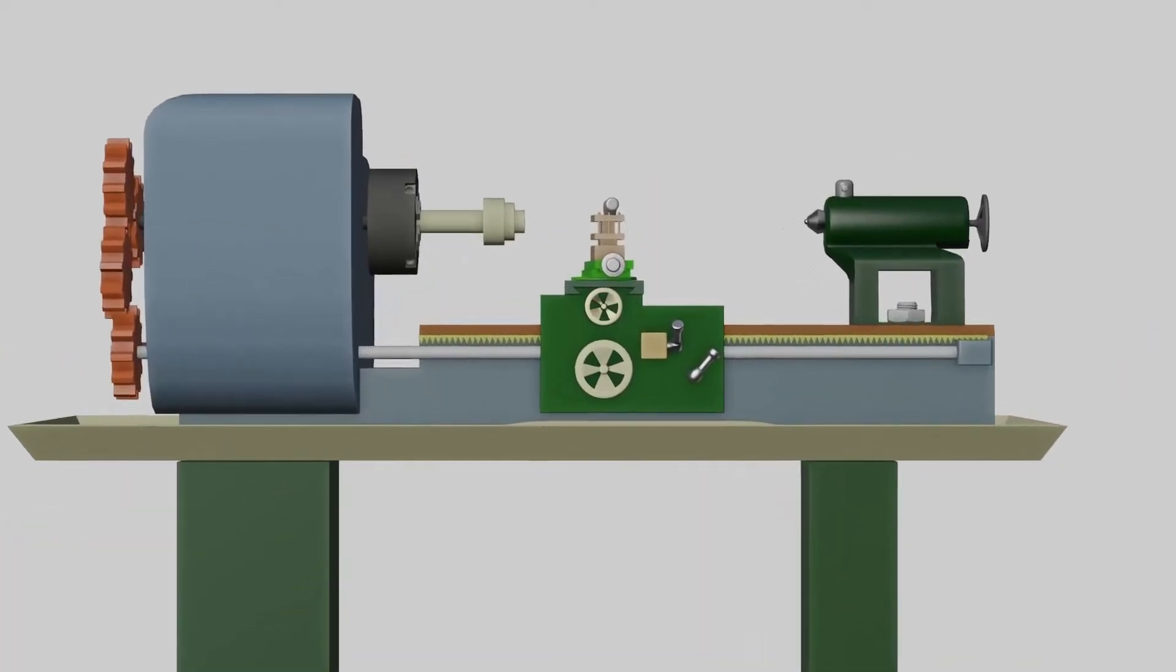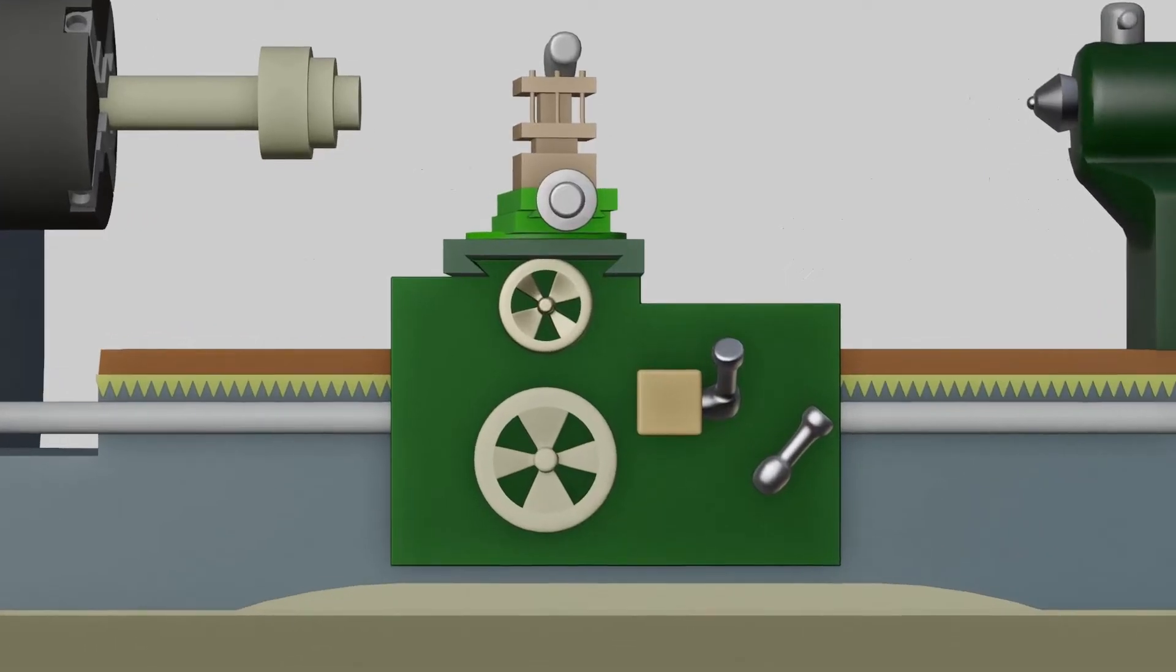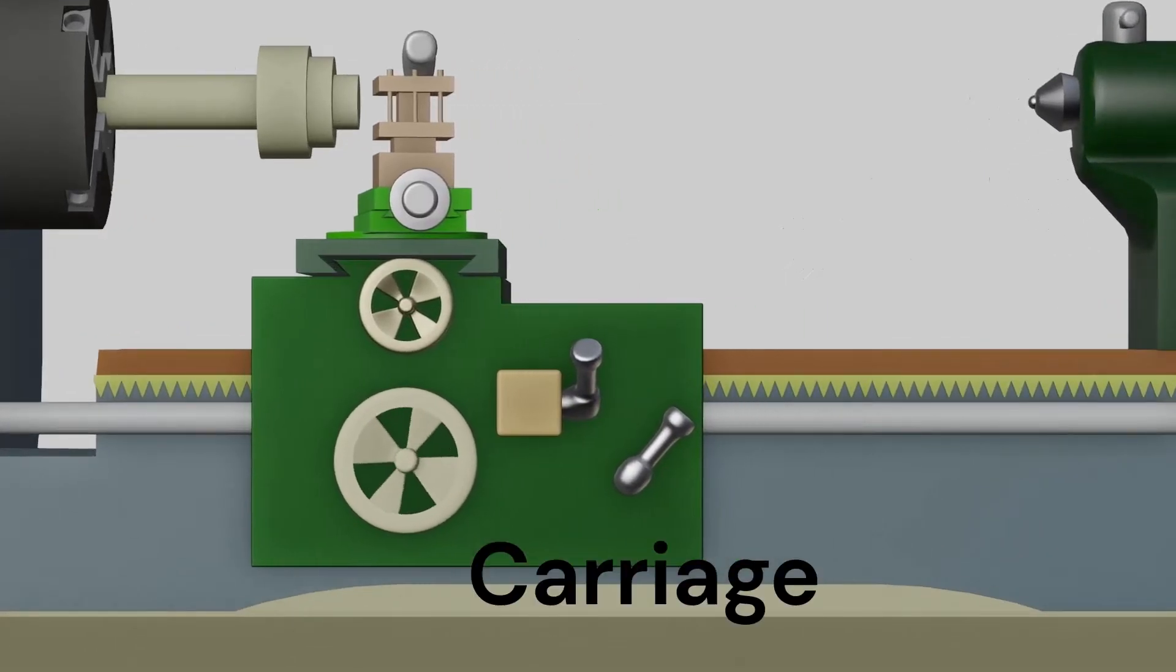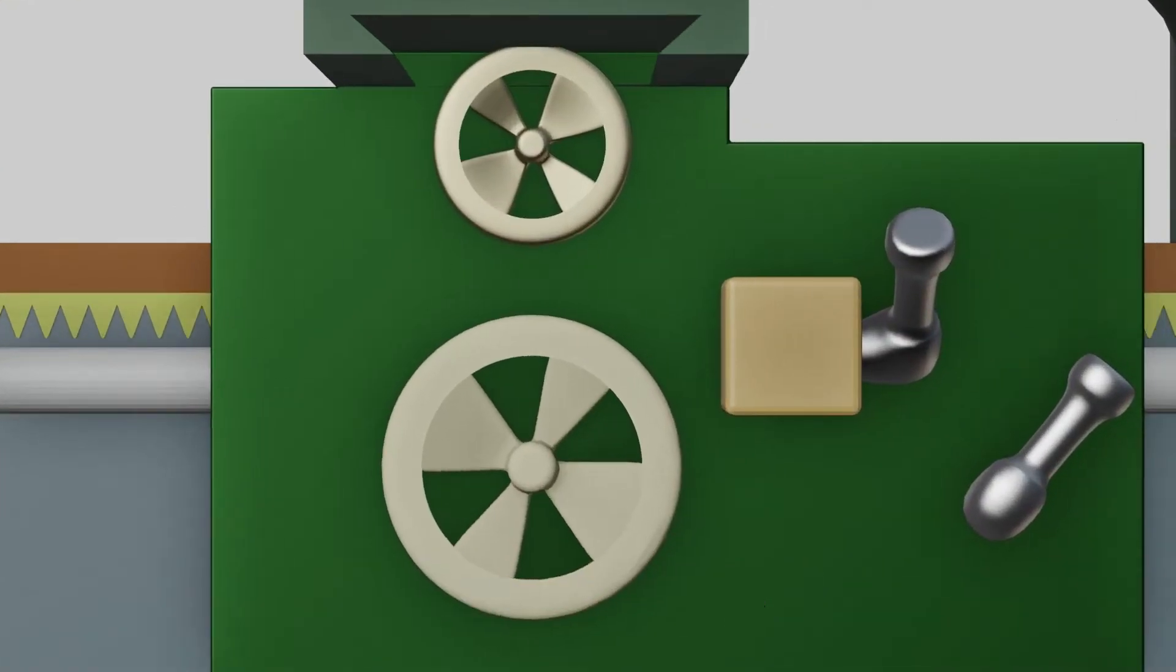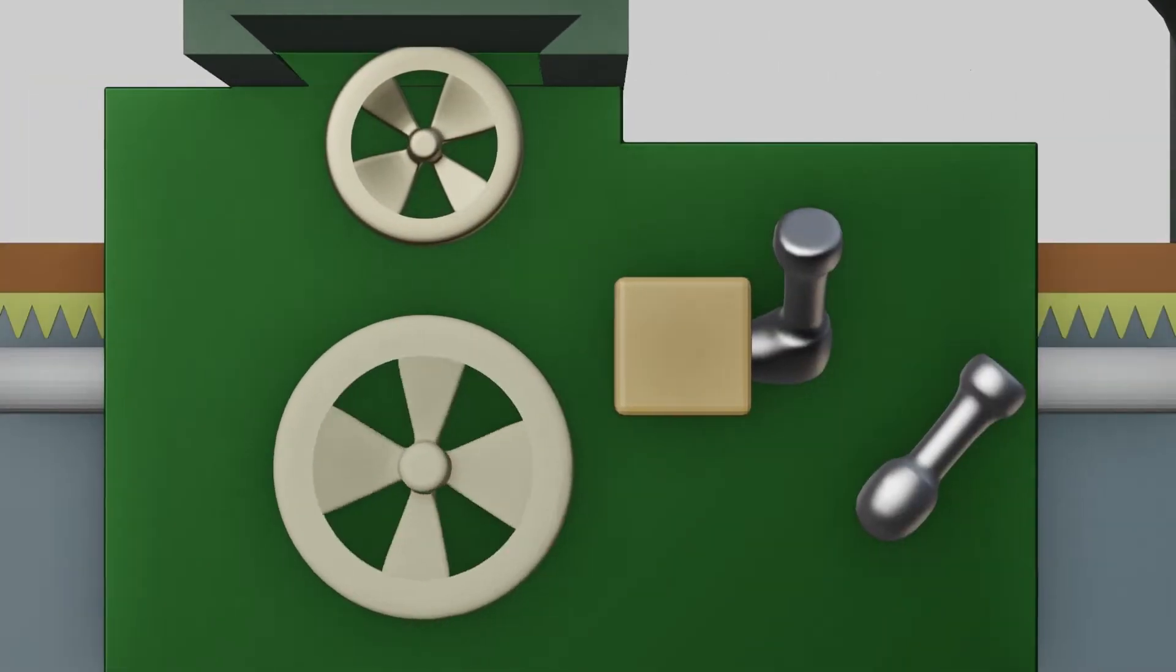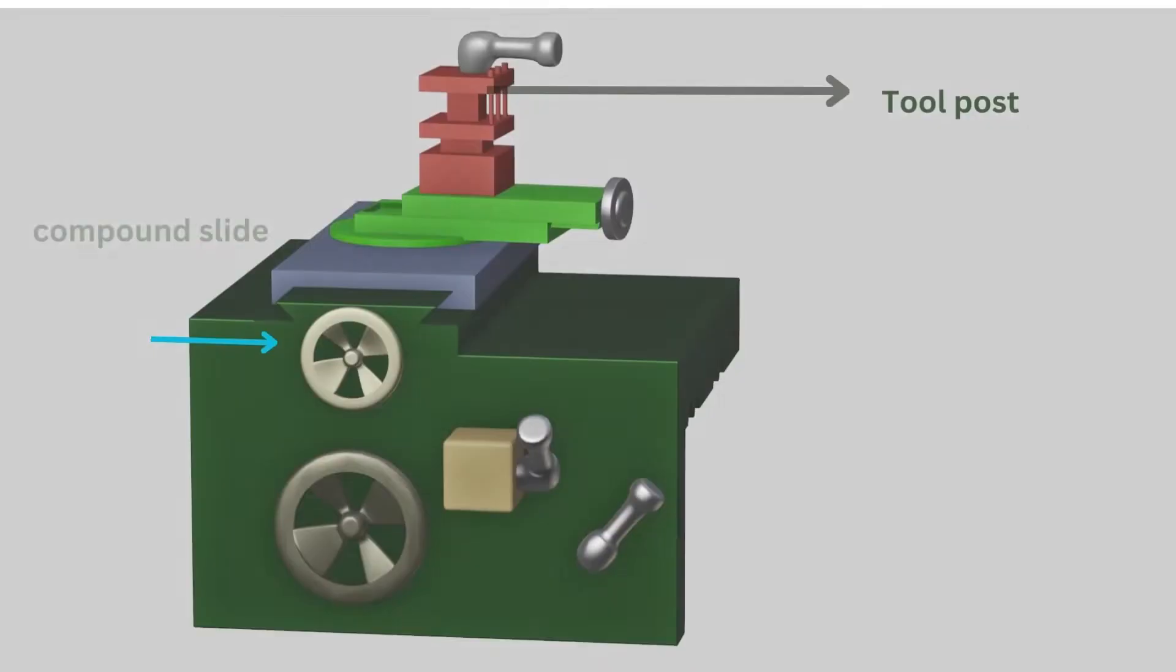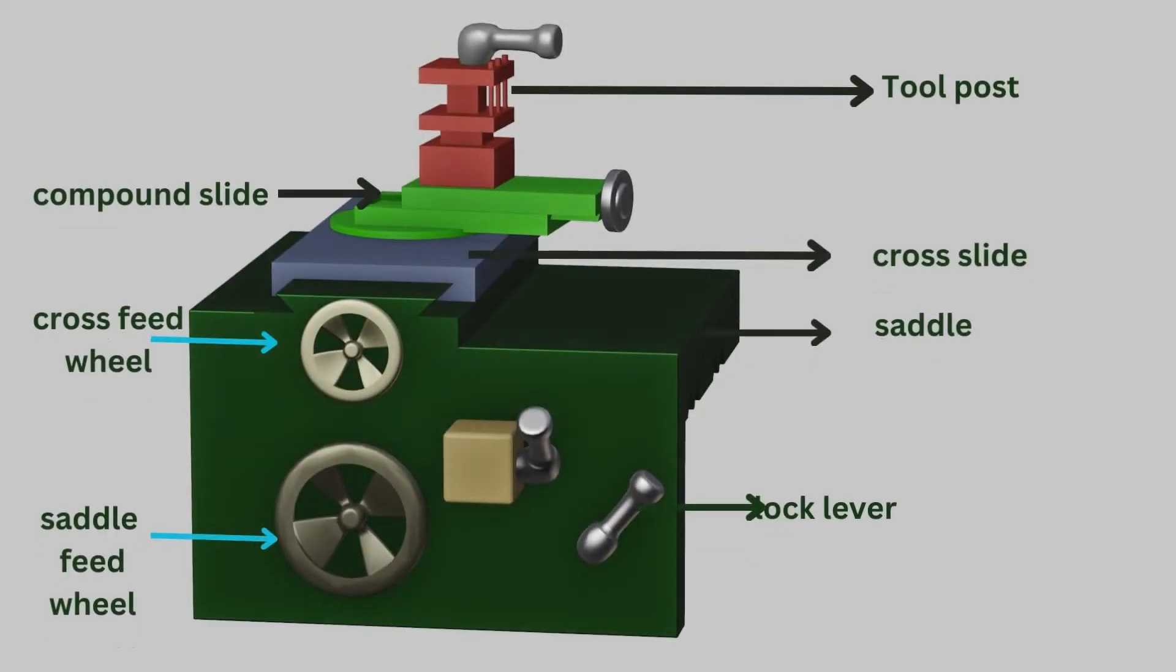Carriage plays an important role in lathe operation. Carriage is moved between tailstock and headstock. It also holds tools. It also has a feed wheel lock lever. The main components of the carriage are shown above.